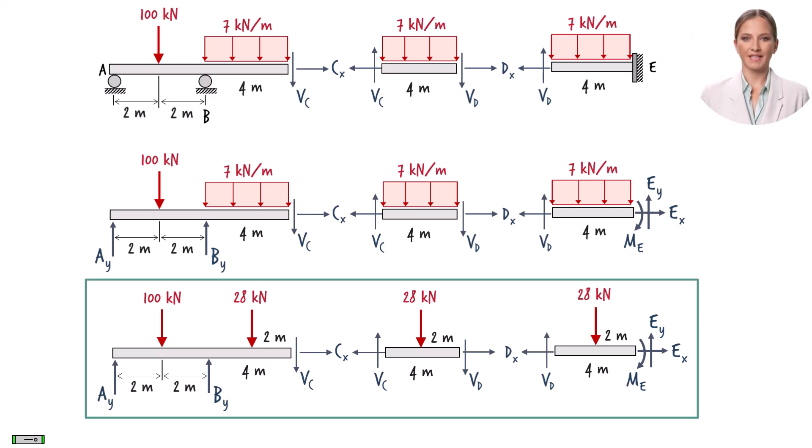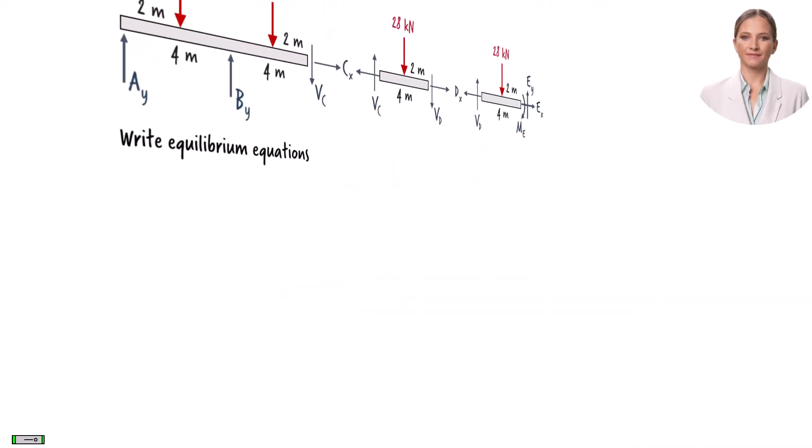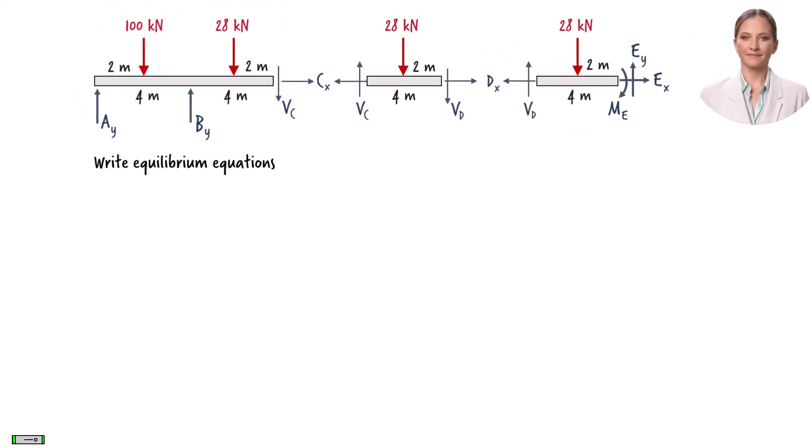We are now ready to write the static equilibrium equations. For each segment of the beam, we need to write three equilibrium equations. The sum of the forces in the x-direction, the sum of the forces in the y-direction, and the sum of the bending moments about the z-axis must be zero.